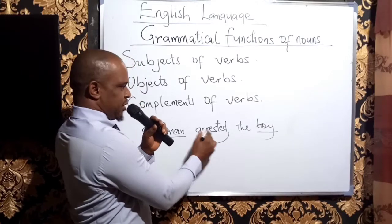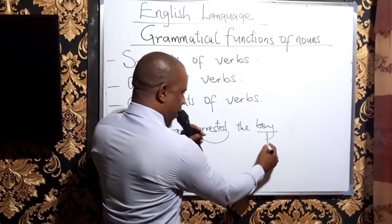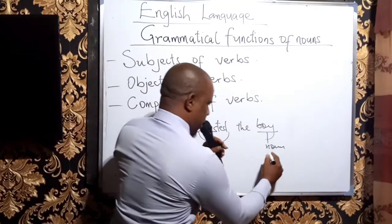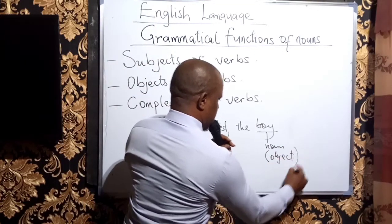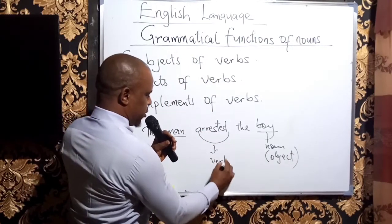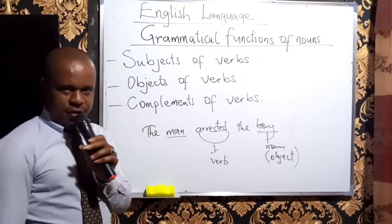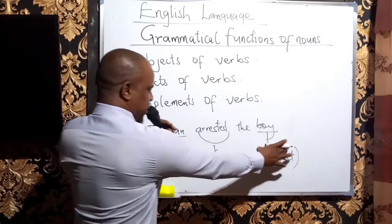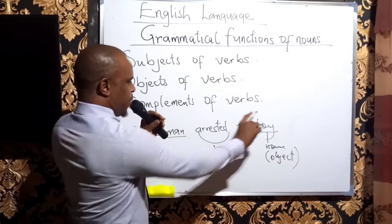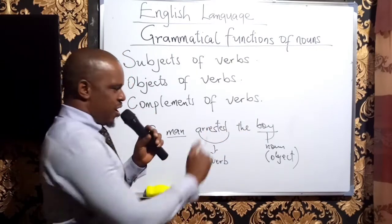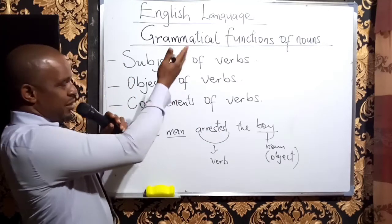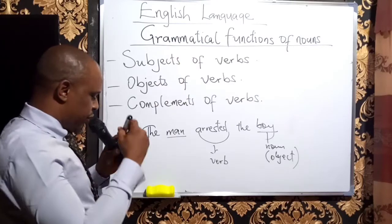Which verb? Arrested. So 'boy' is a noun playing the role of object of the verb 'arrested.' That is the second grammatical function of nouns — functioning as the object of the verb.